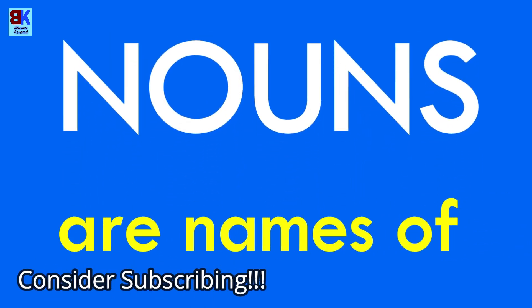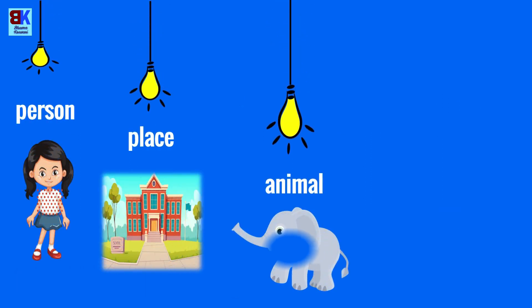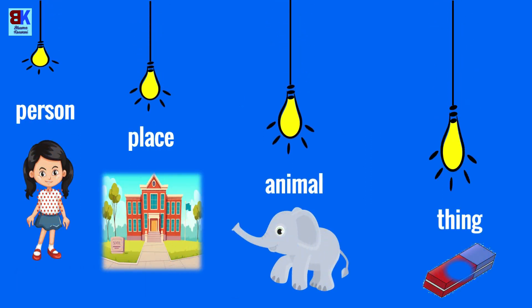Nouns are names of a person, place, animal, or a thing. So, a girl, a school, an elephant, and an eraser are all nouns.